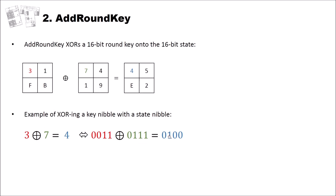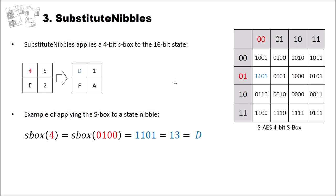Substitute Nibbles applies a 4-bit S-Box, a substitution box, to the 16-bit state. For instance, we have as input 4E as the first byte and 52 as the second. We use the S-Box and obtain DF and 1A. How does this work? Let's apply the S-Box to the nibble 4. You can see the S-Box on the right side — it's just a lookup table. We put in 4, which is 0100. We go to the table, look up 0100, and see 1101. That's our output, which is decimal 13 or hexadecimal D. You do this for all nibbles in the Substitute Nibbles building block.